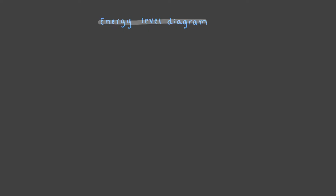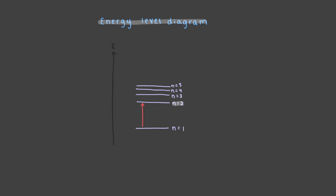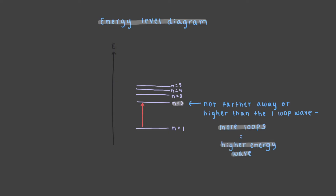Let's illustrate this energy change using an energy-level diagram. These diagrams have a single axis — the vertical axis, which is energy. Things higher in energy are higher up on the axis. These lines represent n, or the number of loops. If we have an electron wave with one loop and add just the right amount of energy, we can transform it into a wave with two loops. The two-loop wave is not farther away or higher — it just has more loops and is a higher energy wave.